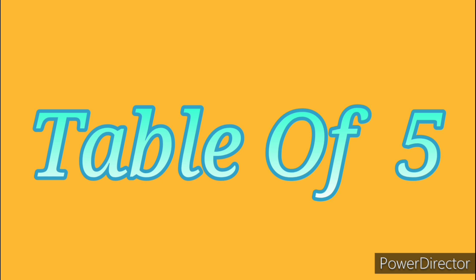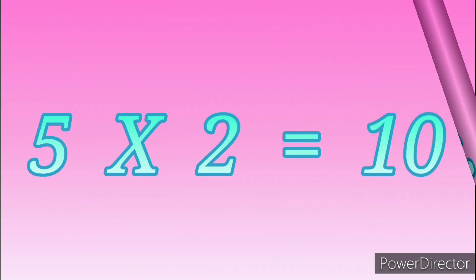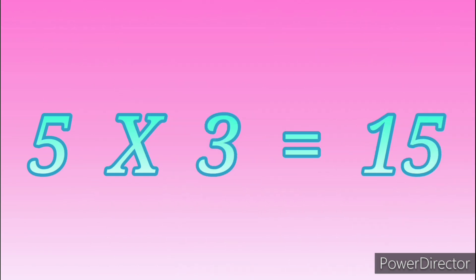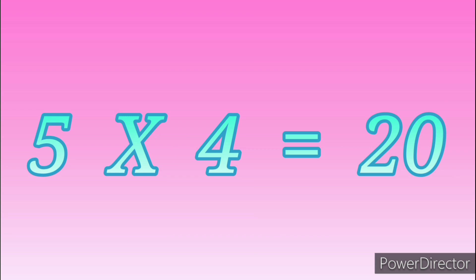Table of Five. 5 ones are 5. 5 twos are 10. 5 threes are 15. 5 fours are 20.